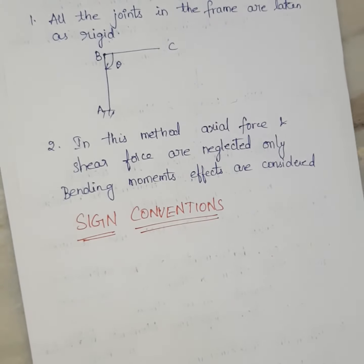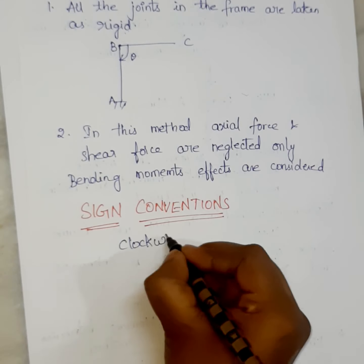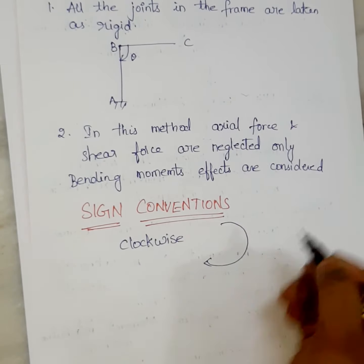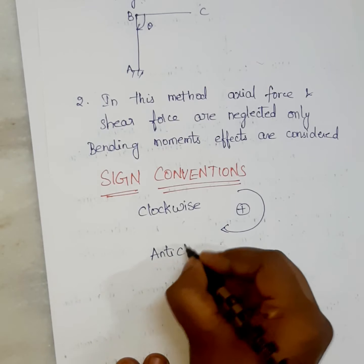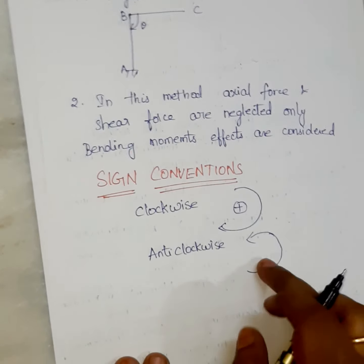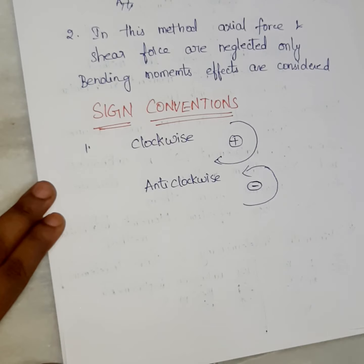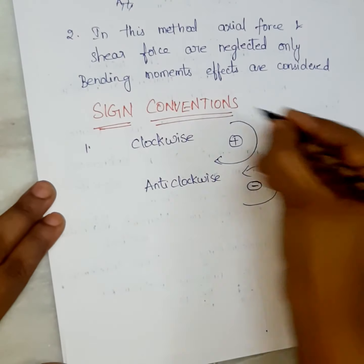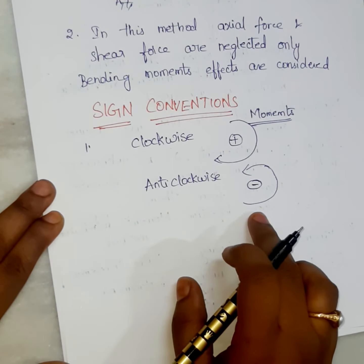My whole chapter depends upon these sign conventions. For clockwise direction, I am taking it as positive. For anti-clockwise direction, I am taking it as negative. This is the first sign convention. For moments — clockwise moments are taken as positive and anti-clockwise moments are taken as negative.